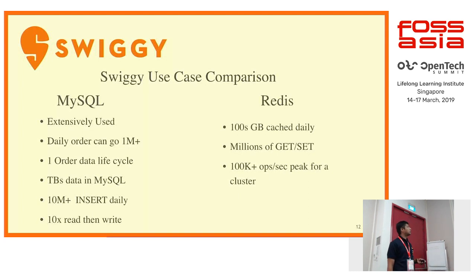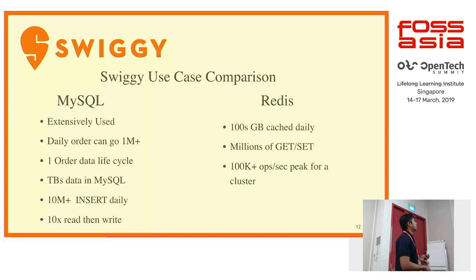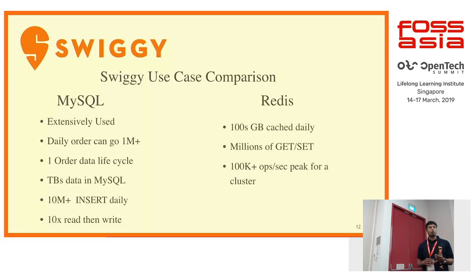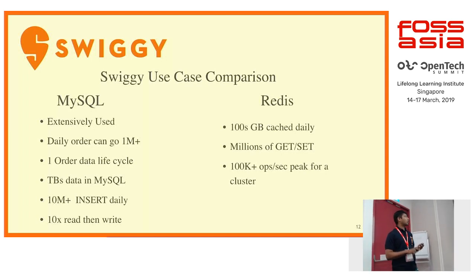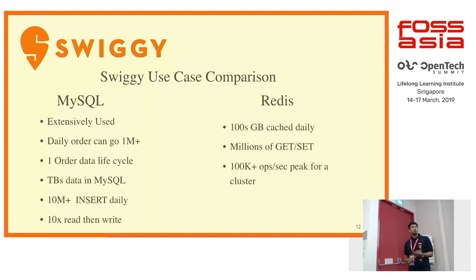Let's see a use case from Swiggy, using both MySQL and Redis extensively. Orders at Swiggy can go to one million plus on a daily basis, and one order lifecycle requires multiple reads and writes. When a user opens the app to order food, the first request fetches the restaurant listing and menu. When you create a cart, a write request happens. When you place an order, the order and transactions are written. The order is shown to the restaurant, confirmed, assigned to a delivery person, and tracked at every step. One order may involve more than 50 writes and 100 plus reads.